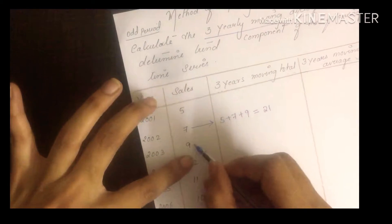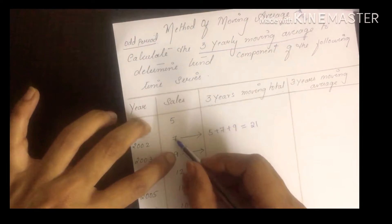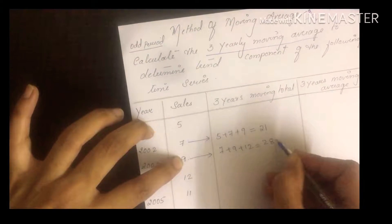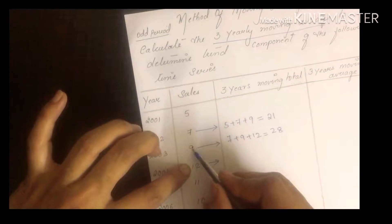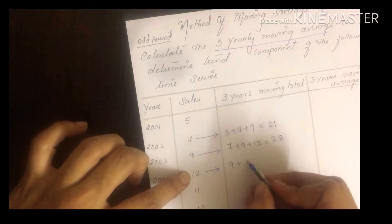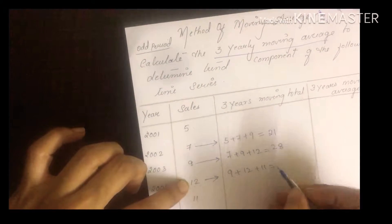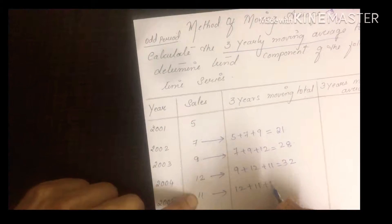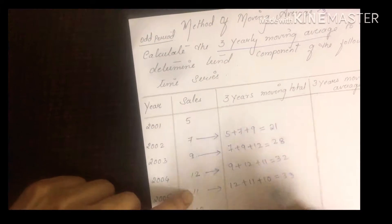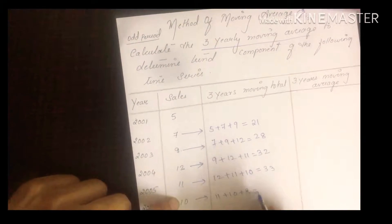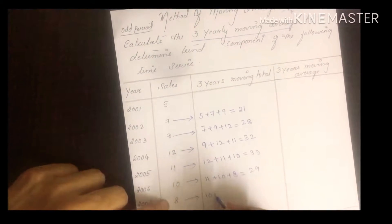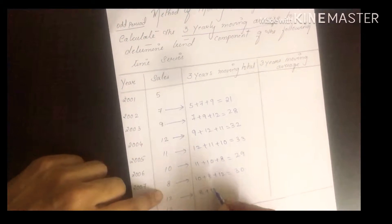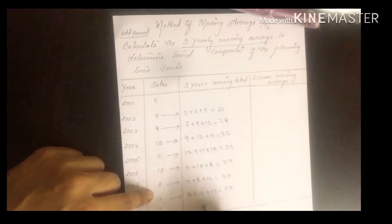So 5 plus 7 plus 9 equals 21. Next, 9 is the center, so 7 plus 9 plus 12 equals 28. Then next, 9, 12 and 11 - that's 32. Now for this, 12 plus 11 plus 10 equals 33.